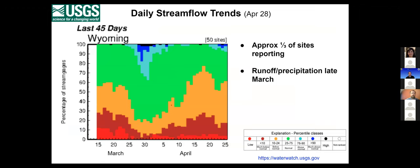Here are the daily streamflow trends for the last 45 days, 50 sites reporting — approximately a third of the sites we have in Wyoming. Starting off in the middle of March, about half of the sites were reporting normal values. Coming into the latter part of the month, we see precipitation or runoff that occurred, some blues and light blues meaning above normal or much above normal conditions. That quickly dissipated and we're back to about 40% of sites reporting normal conditions, with an increase in below normal to much below normal. Things are just kind of bouncing around a little bit as we get precipitation and things melt off.